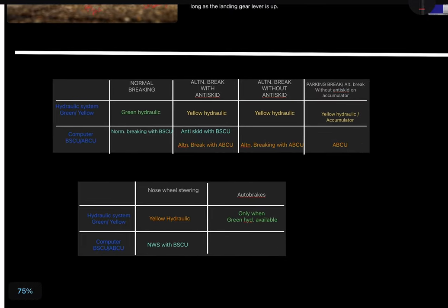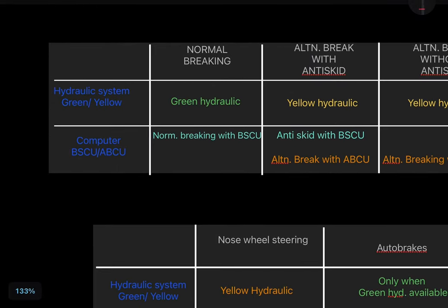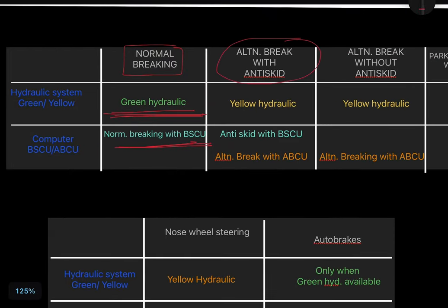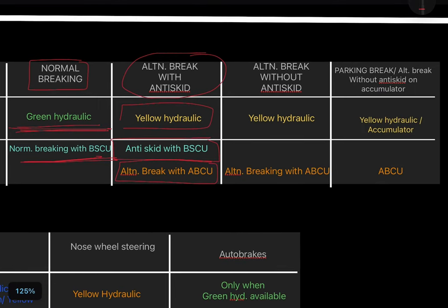In summary: in normal braking, supply is taken from green hydraulic and braking is controlled by BSCU. In alternate braking with anti-skid, supply is taken from yellow hydraulic, braking is controlled by ABCU, and anti-skid function is provided by BSCU — remember, only BSCU has the anti-skid function. In alternate braking without anti-skid, supply is again from yellow hydraulic and braking is controlled by ABCU only.